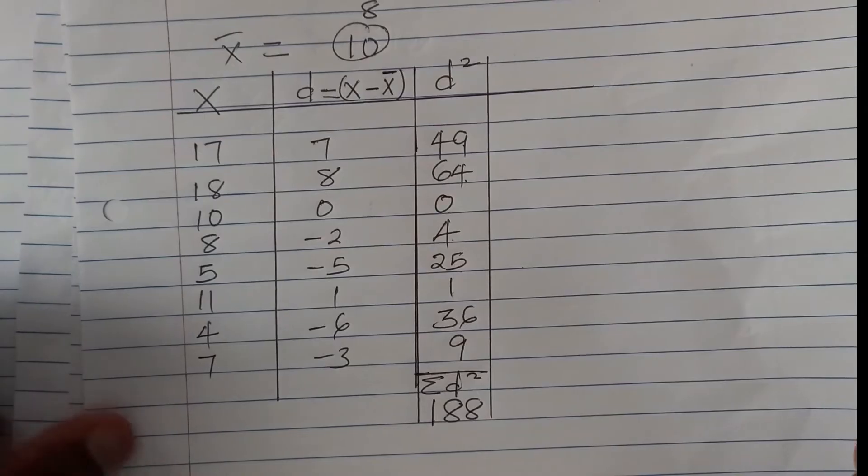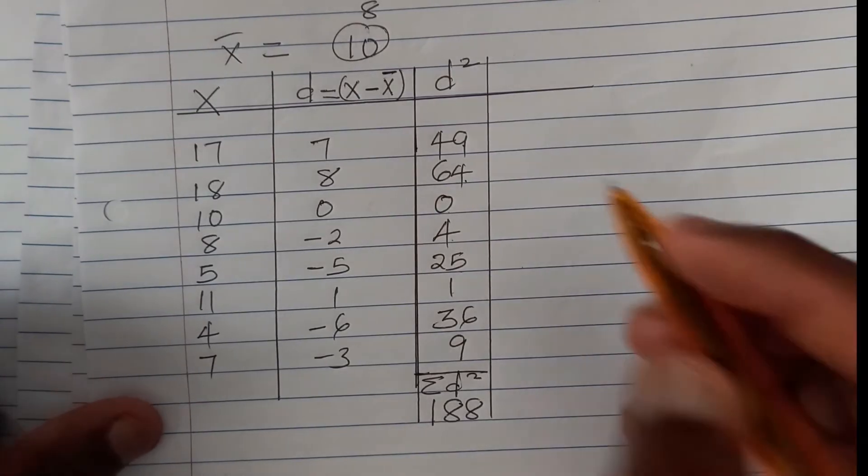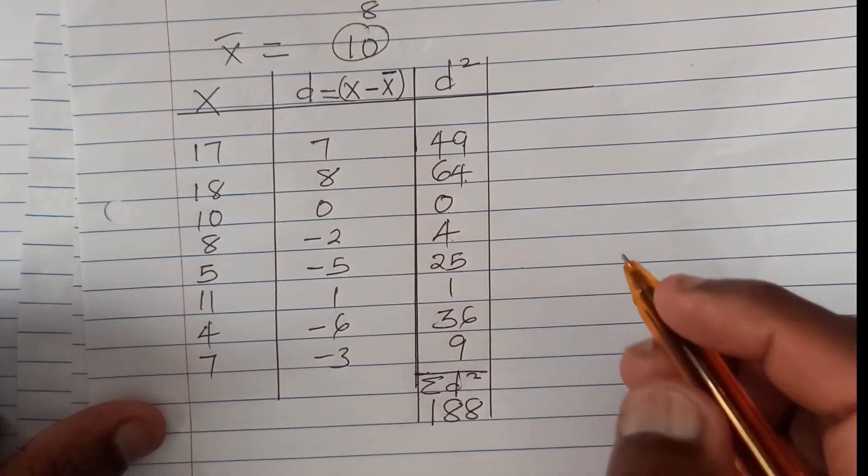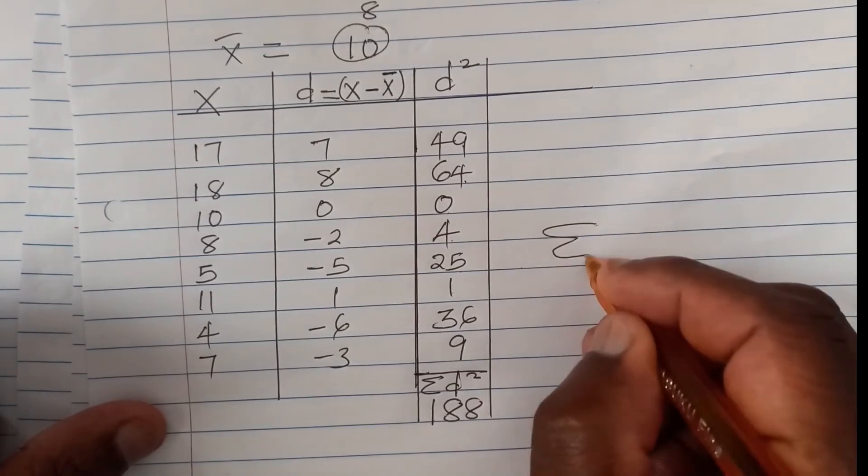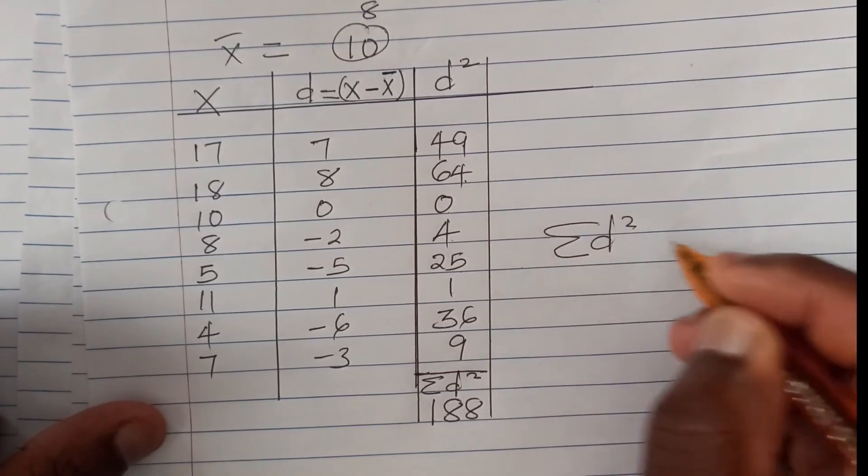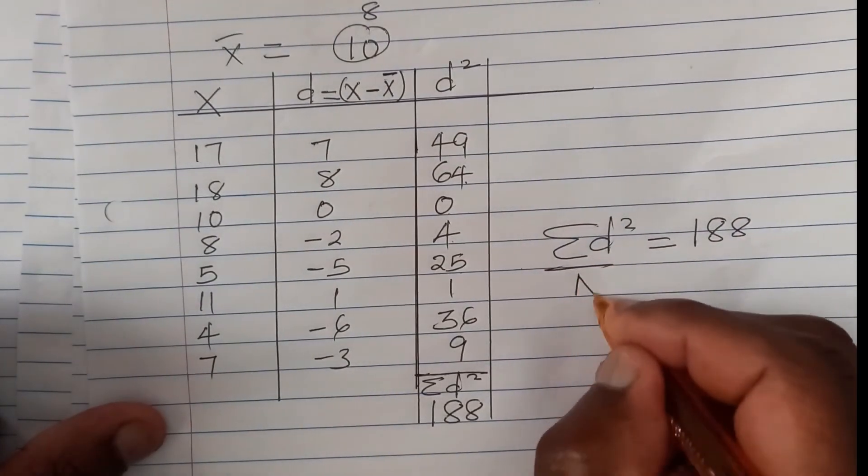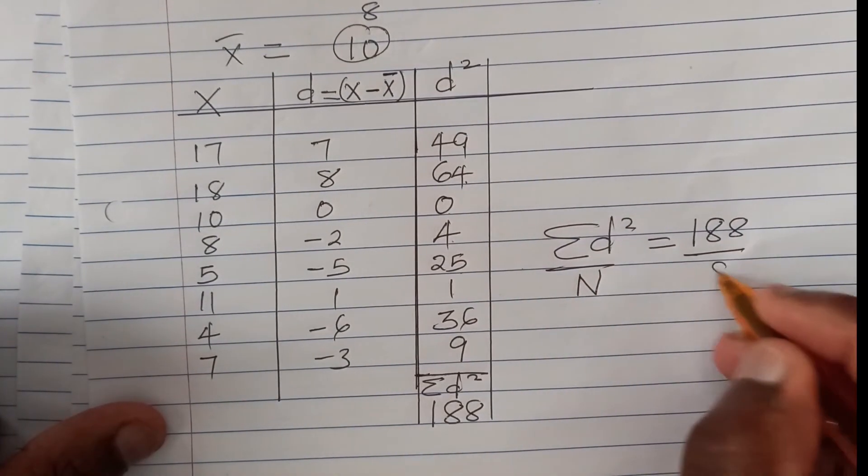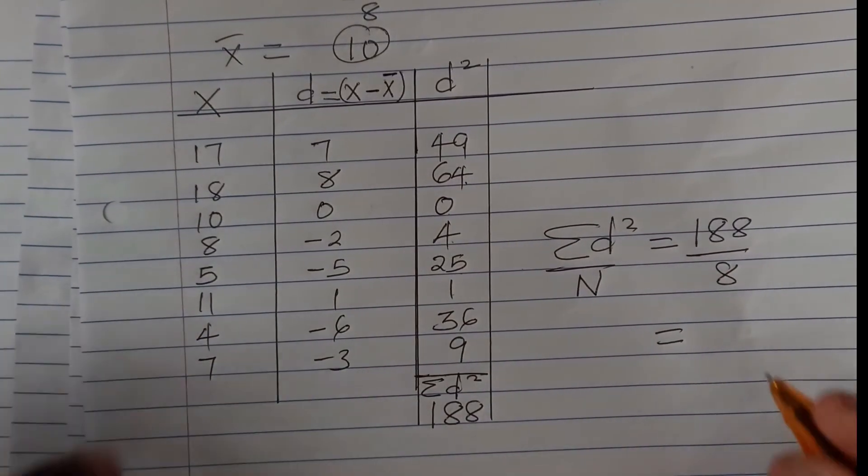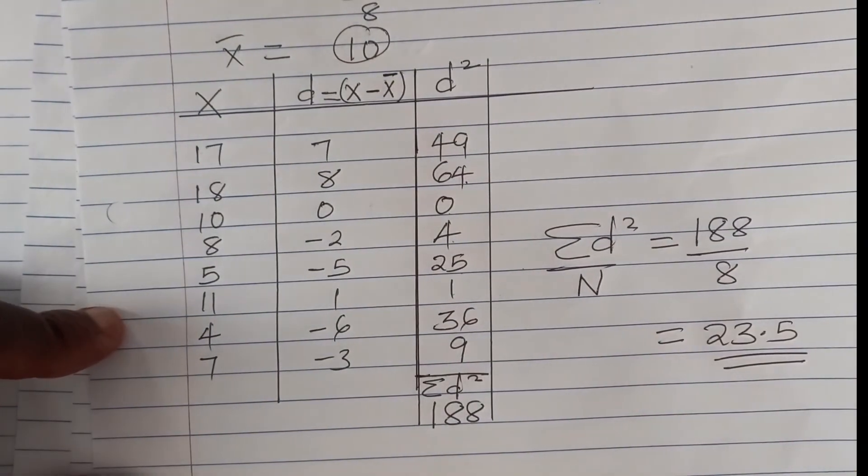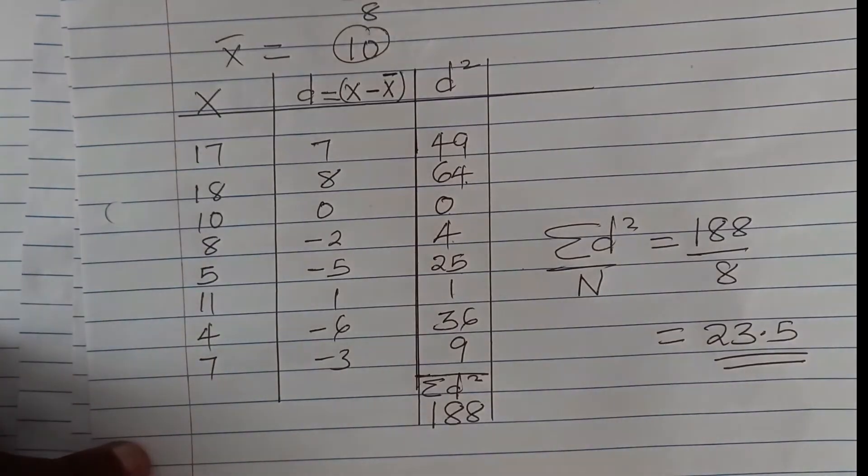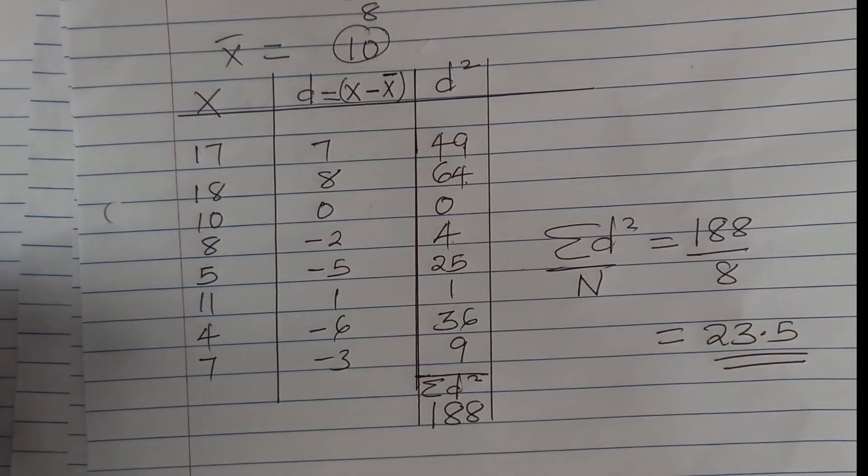Now we have everything that we need. So therefore, mean squared deviation will be given by the summation of d squared, which is 188 divided by n, total values, which are 8. So you divide that, and that will give 23.5. So that is how you get the mean squared deviation or the variance of ungrouped data.